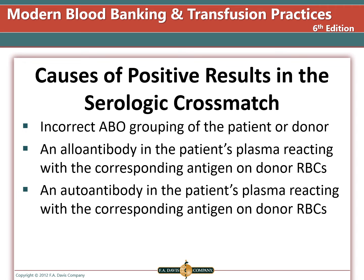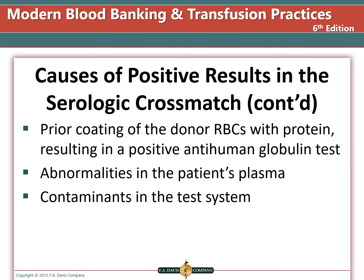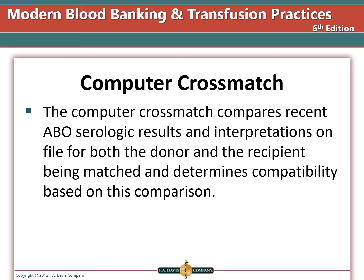There could also be an autoantibody in the patient's plasma reacting with the same antigen on the donor red blood cells, or prior coating of the donor red blood cells with antibodies resulting in a positive AHG cross-match, or abnormalities in the patient's plasma or contaminants in the test system. The computer cross-match compares recent ABO serologic results and interpretations on file for both the donor and recipient, and these programs must meet FDA standards and be validated prior to use.